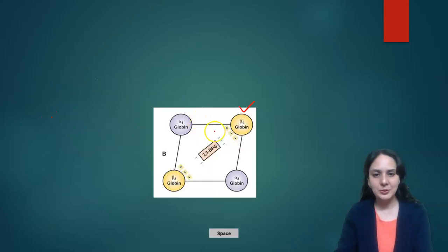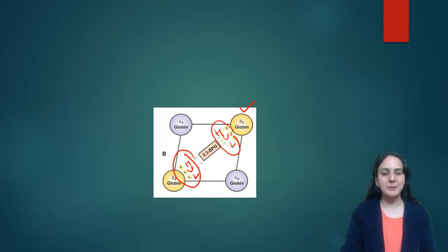2,3 BPG binds with the beta globin with help of three amino acids: histidine, valine and lysine. These are also important and you should remember. So the 2,3 BPG binds with the beta globin of the hemoglobin with help of three amino acids.